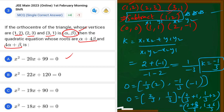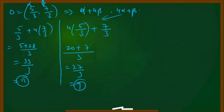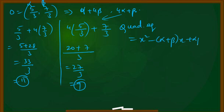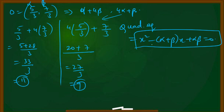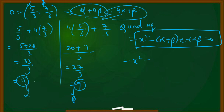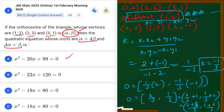Since alpha + 4 beta and 4 alpha + beta are the two roots of the quadratic equation, we use the formula: x² - (sum of roots)x + (product of roots) = 0. Sum = 11 + 9 = 20; product = 11 × 9 = 99. Therefore the quadratic equation is x² - 20x + 99 = 0. Option number A is the correct answer.